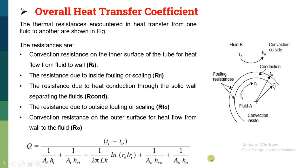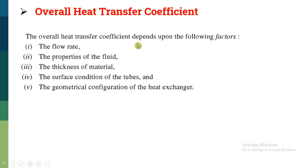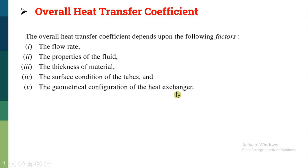This is the overall heat transfer coefficient considering fouling. The overall heat transfer coefficient depends on the following factors: number one, flow rate of both hot fluid and cold fluid; properties of the fluid; thickness of the tube material, since conduction resistance depends on tube thickness; surface condition of the tube, which depends on the fouling rate and how much it affects heat transfer; and geometrical configuration of the heat exchanger, which is a design criteria.